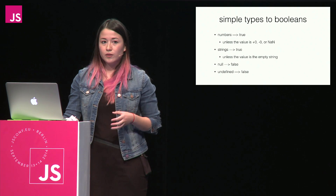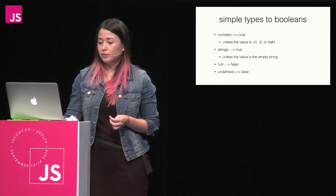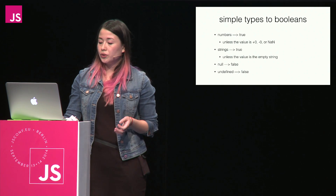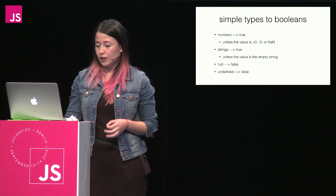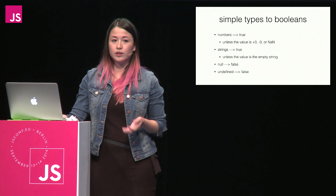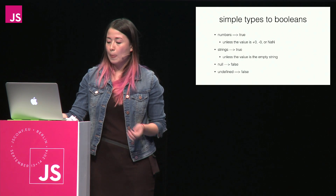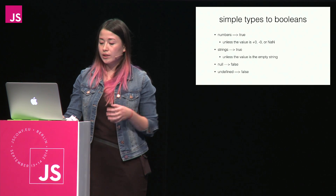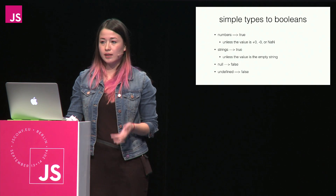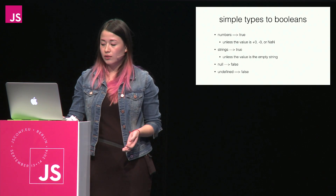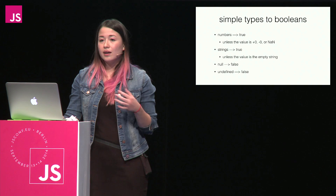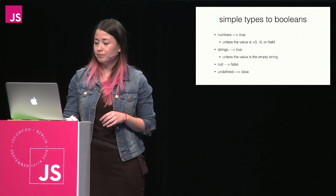What about converting simple types to Booleans? Numbers are converted to true unless the value is positive zero, negative zero, or Not a Number — these are obviously converted to false. Strings are also converted to true unless the value is the empty string, which is converted to false. Null and undefined are both converted to false.